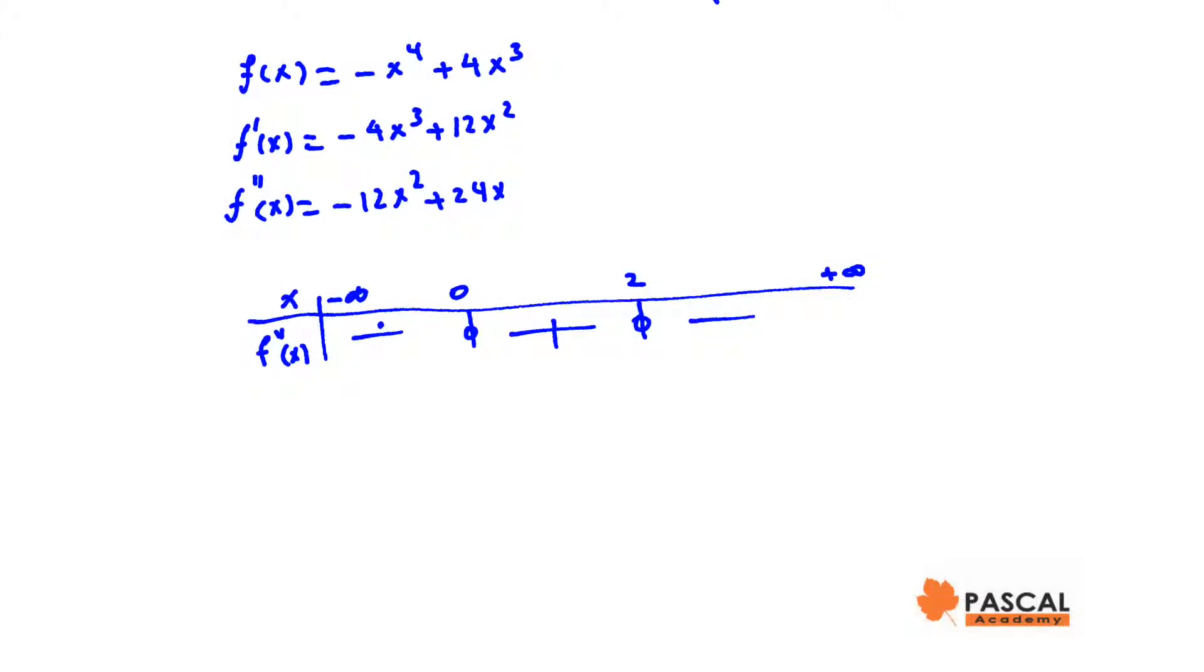Therefore, the function is concave down for x less than 0, concave up between 0 and 2, and for x greater than 2, it is concave down. (0,0) and (2, f of 2), which is negative 16 plus 32 equals 16, are points of inflection.